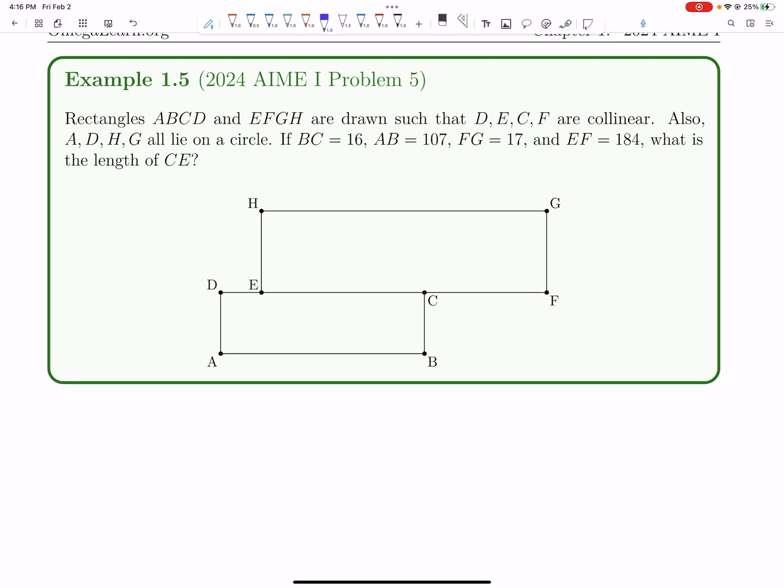Let's now tackle number 5 on the AIME. Rectangles ABCD and EFGH are drawn such that D, E, C, and F are collinear.